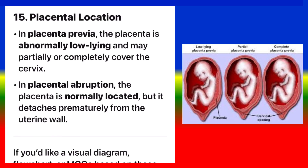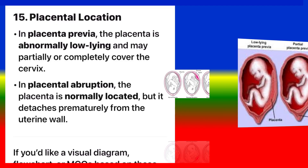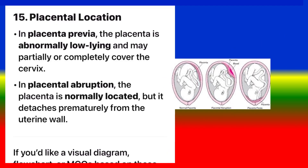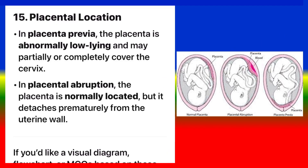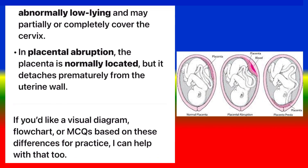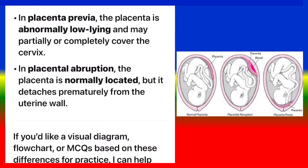Placental location. In placenta previa, the placenta is abnormally low-lying and may partially or completely cover the cervix. In placental abruption, the placenta is normally located but detaches prematurely from the uterine wall.